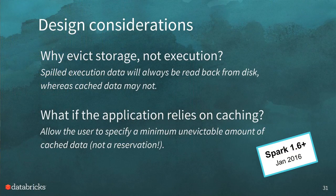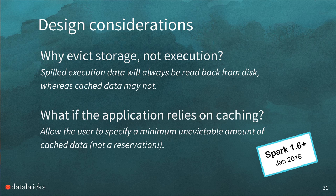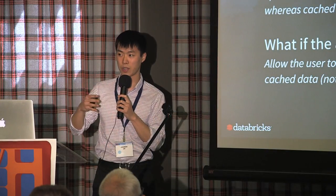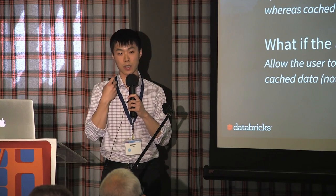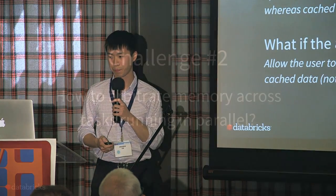For applications like graph computation that rely heavily on caching and read the same dataset repeatedly, we allow the user to specify a minimum amount of cached data that will never be evicted. Importantly, this is not a reservation — unlike static allocation, the space isn't reserved in the beginning. So if you don't end up caching any data, you can still use that space for execution. That was perhaps the hardest challenge to solve. However, once we figure that out, we still have to figure out how to arbitrate memory across tasks running in parallel.